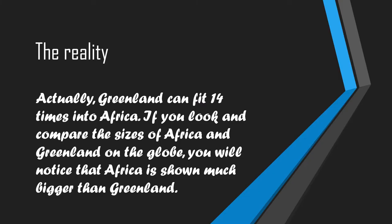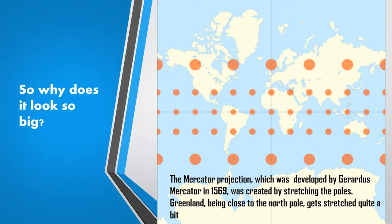The reality is that Greenland can actually fit 14 times into Africa. If you have a globe, check and see — you will notice that Africa is much bigger on a globe than it is on a map. So why does Greenland look so big? Why are the poles changed so much, making Greenland appear the same size as Africa?